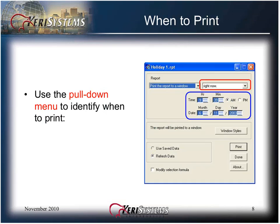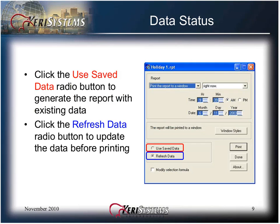Use the pull-down menu to identify when to print. You can print right now, which is the default value, or choose various delay options, or specify a time. Click the Use Saved radio button to generate the report with the existing data. Click the Refresh Data radio button to update the data before printing. The Refresh Data radio button is typically used for controller event-based reports.